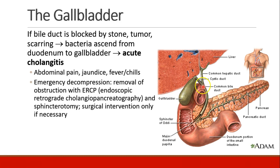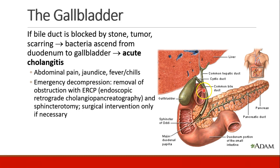If the bile duct is blocked by a stone, tumor, or scarring, bacteria can ascend from the duodenum into the gallbladder, and this is called acute cholangitis. Presenting with abdominal pain, jaundice, and fever or chills, this is an emergency. It needs to be decompressed and the obstruction removed, either by ERCP — endoscopic retrograde cholangiopancreatography — where a scope is advanced up the bile duct and sphincterotomy is performed to open it up, or surgical intervention if absolutely necessary.